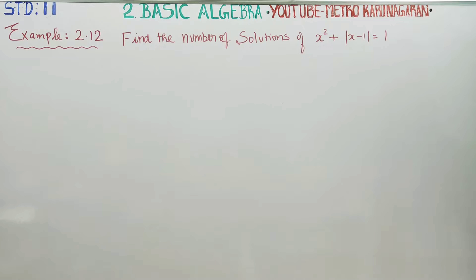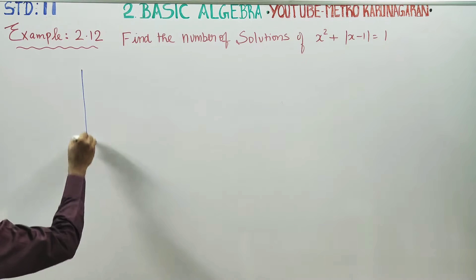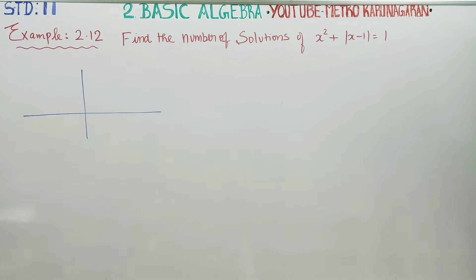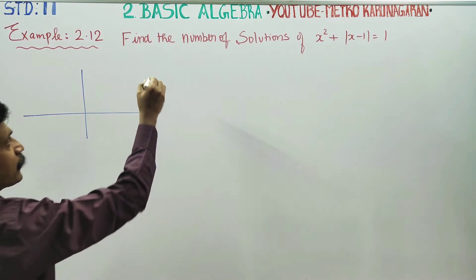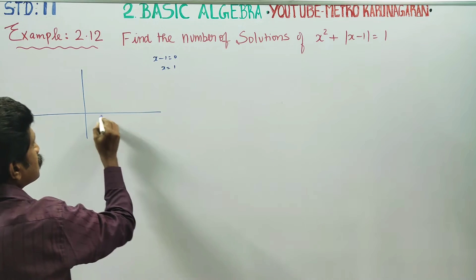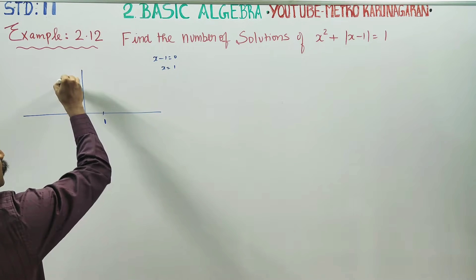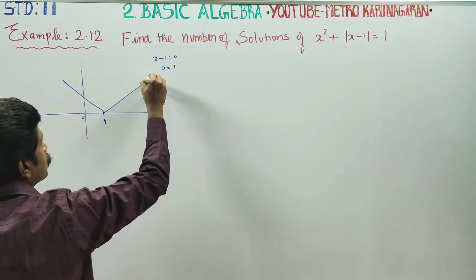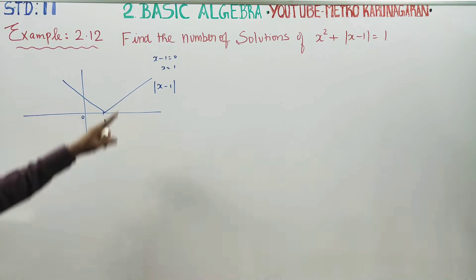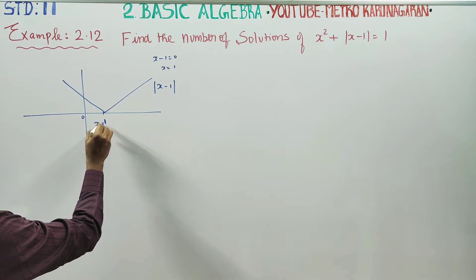Before entering into this equation, let us look at the graph of modulus of x-1. Setting x-1 equal to 0, we get x is equal to 1. That point is 0 on the graph and 1 on the x-axis. Here is the graph of modulus of x-1. At x equal to 1, we enter a point.